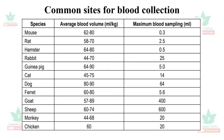The average blood volume and maximum blood sampling per time: for mouse it is 0.3 ml; for rats it is 2.5 ml; for hamster 0.5 ml; for rabbits 25 ml; for ferrets 5 to 6 ml; for goat and sheep it is 400 ml and 600 ml respectively; and for monkeys and chickens it is 20 ml each.